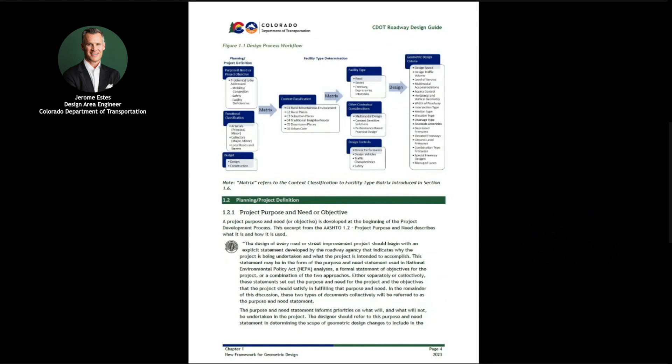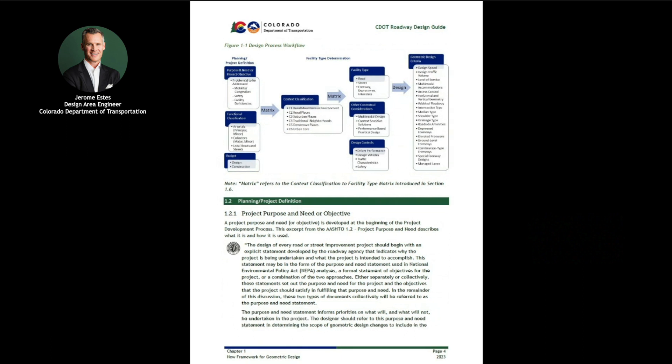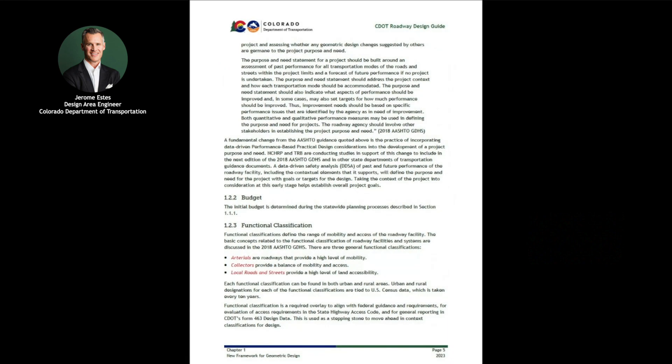Chapter 1 provides direction for engineers and designers that will guide them through a design process workflow to step through and define the elements of a project. This chapter offers a high-level overview of how practitioners consider the purpose and need, otherwise known as the objective of the project. Chapter 1 also discusses the subjects of functional classification, context classification, and facility type.